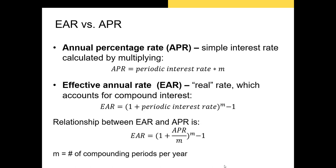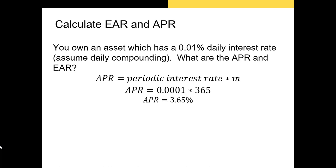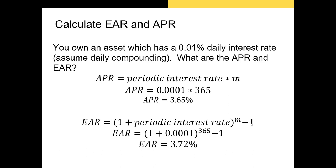Let's work through an example. You own an asset with a one basis point daily interest rate, assuming daily compounding. What are the APR and EAR? The APR is calculated by taking your periodic interest rate — one basis point, or one hundredth of one percent — multiplied by 365 compounding periods per year. So our APR is 3.65%. Our EAR is calculated as one plus one basis point, to the power of 365, minus one. That gives us 3.72%.